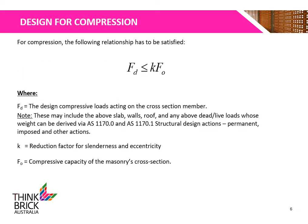For compression, the following relationship must be satisfied: FD, the design compressive load acting on the cross-section member, must be less than or equal to K, the reduction factor for slenderness and eccentricity, multiplied by F0, the compressive capacity of the masonry cross-section.